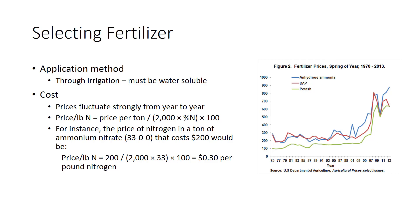For instance, the price of nitrogen in a ton of ammonium nitrate that costs $200 would equal 30 cents per pound of nitrogen according to the calculation. The same calculation can be made for a single bag of fertilizer—just substitute the weight of the bag and the price per bag. Similarly, the cost of potash and phosphate may be computed by substituting their values for nitrogen in the formula.